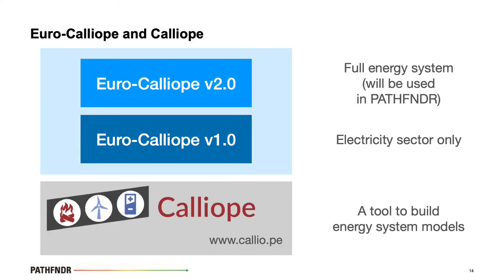To summarize: we have two tools. Calliope is a tool to build energy system models. Euro Calliope is a workflow to process data for use with Calliope. Euro Calliope currently exists in two major versions: version one, which is electricity only, and version two, which is the full energy system version.